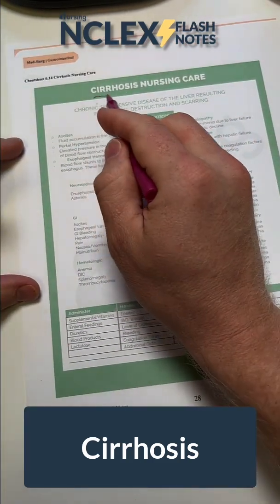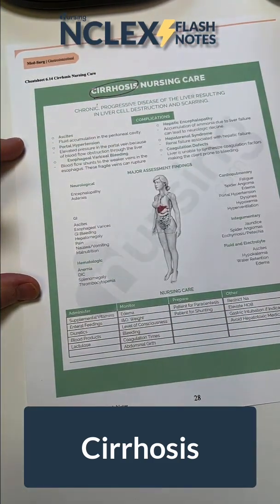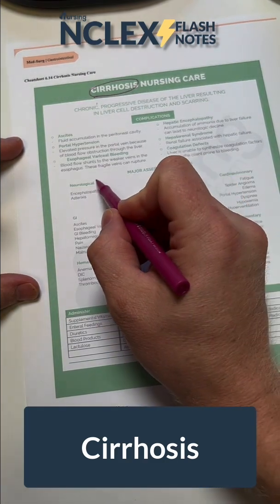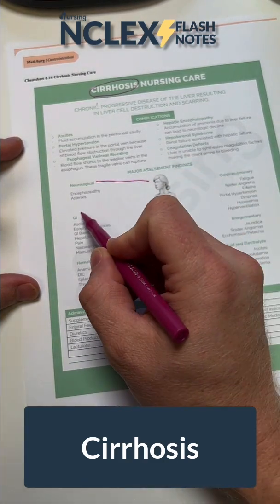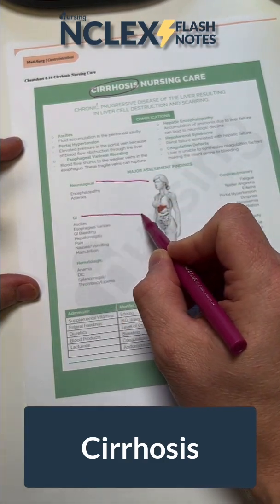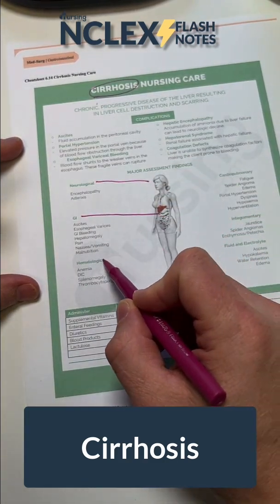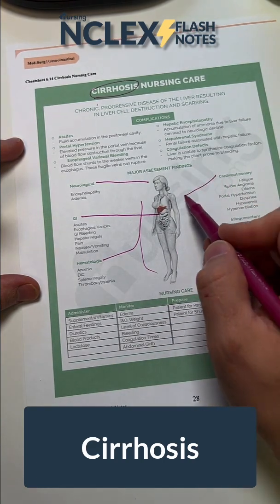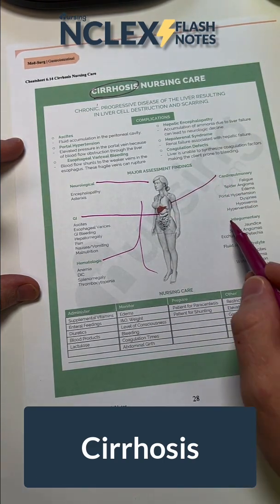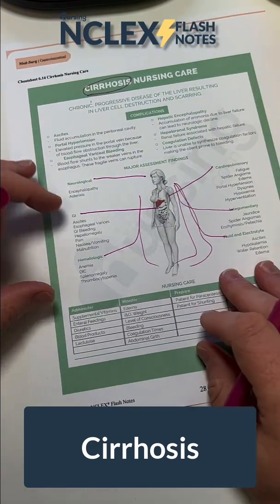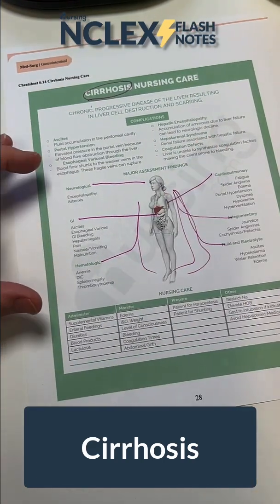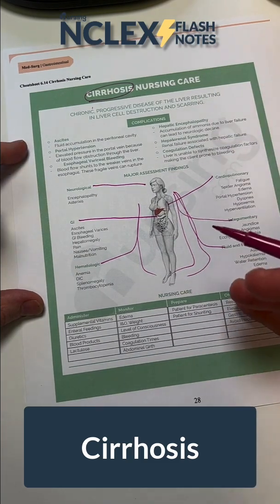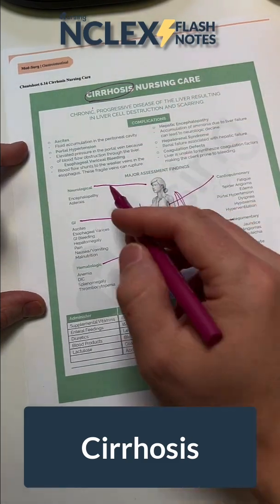What I love about this cheat sheet is it's about cirrhosis, and what I really like is it breaks down all the different complications of cirrhosis based on body system. So let's talk about a couple of these complications you're going to see with cirrhosis.